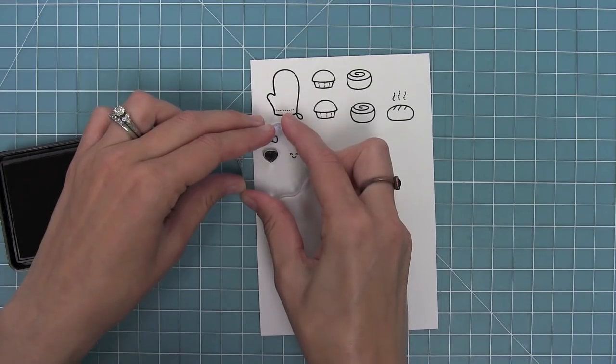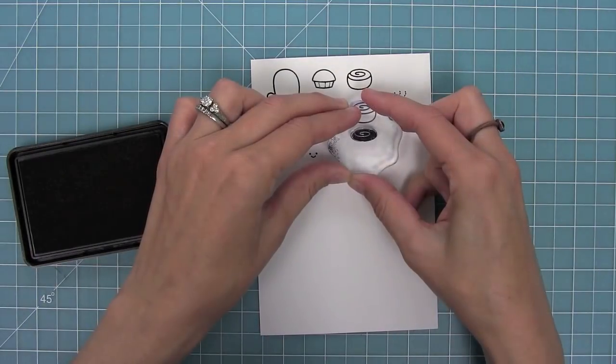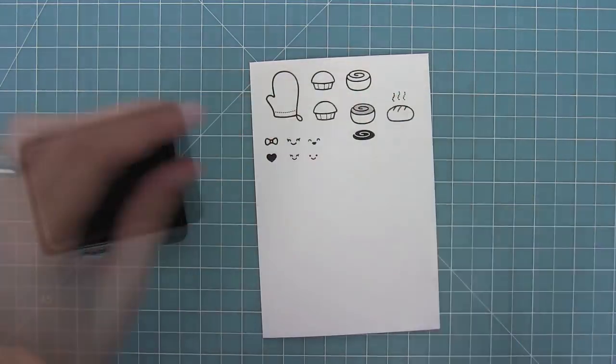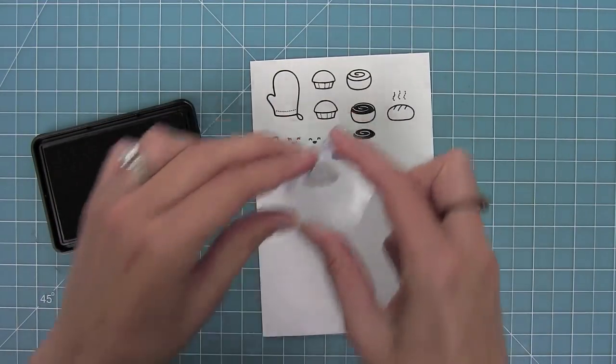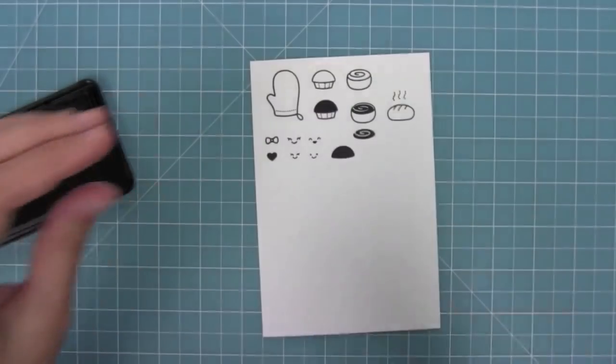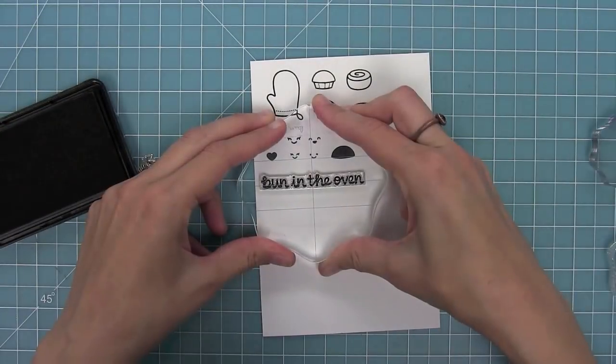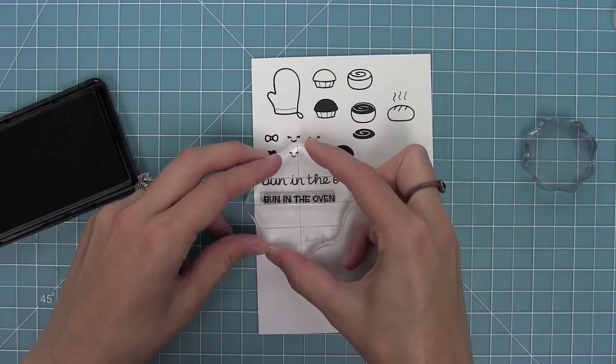We also have a heart and some great solid images for adding the icing to the tops of these images. You can see there I added it to the cinnamon roll-like bun and to the muffin cupcake type bun, and I love that you can color it in with just that nice solid stamp.